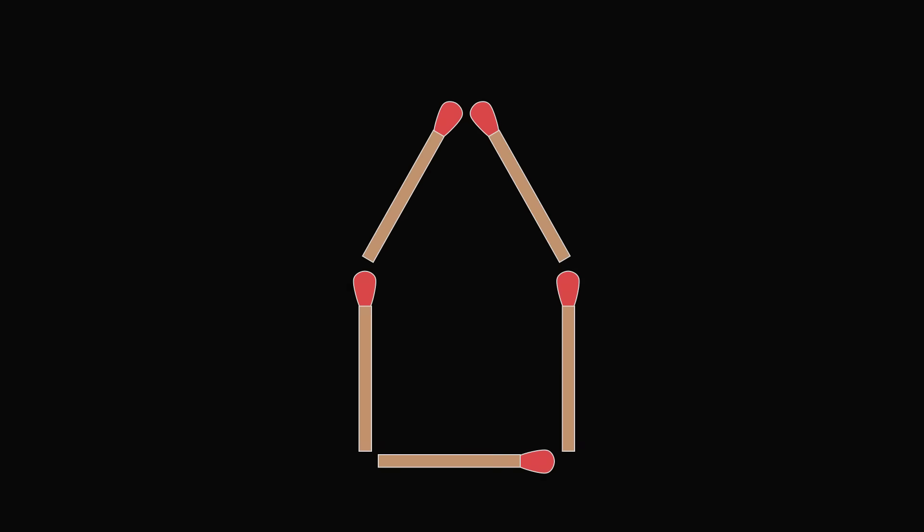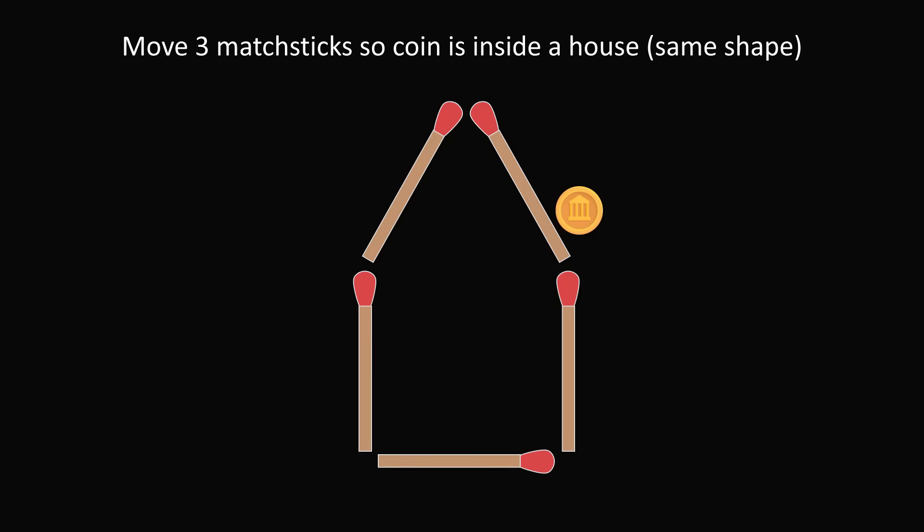Puzzle 5. We have a house made up of matchsticks, and there is a coin outside the house. The challenge is to move three matchsticks so the coin is inside a house. The resulting shape must be the same shape as the original house, and you cannot move the coin.